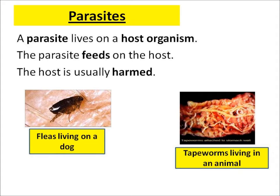This is all about interdependence — how two species may be dependent on each other. First we're going to look at parasitic relationships. A parasite is an organism that lives on a host organism, and normally the parasite feeds on the host, and the host is usually harmed.